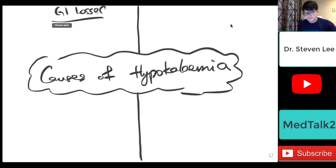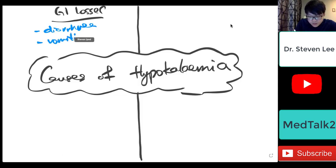So GI losses, you can think of persistent vomiting or persistent diarrhea. That is one of the causes that you can think of. Of course, this can be primary or secondary.